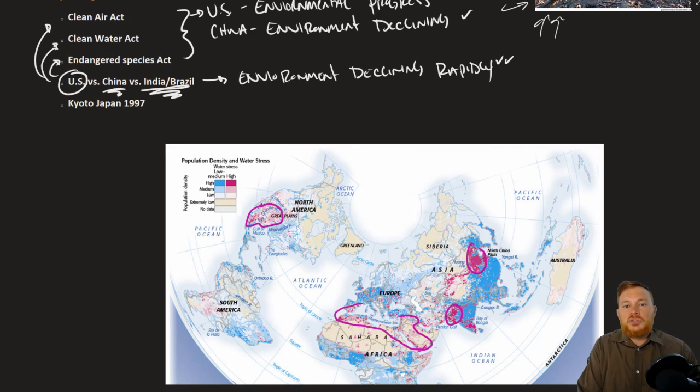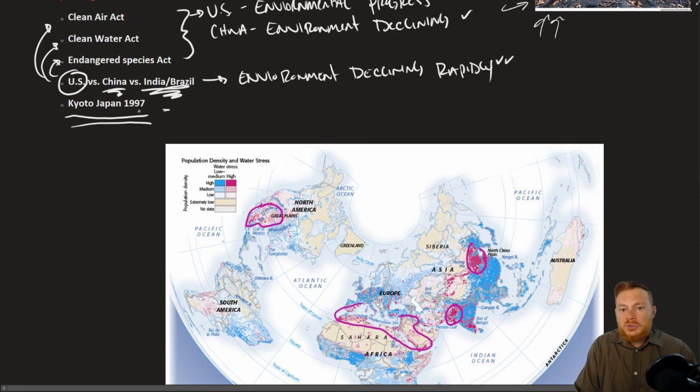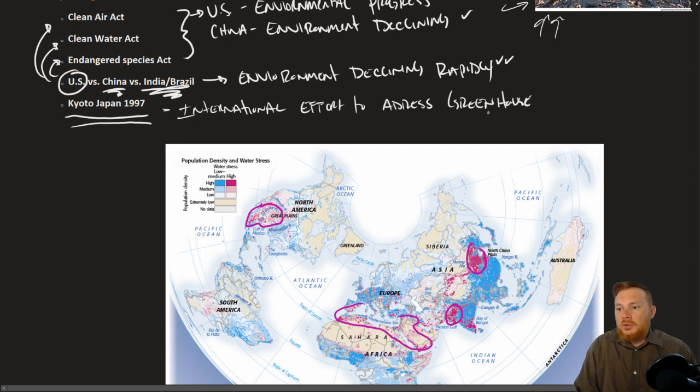But there have been some international efforts to curb environmental problems. The meeting in Kyoto, Japan, sometimes called the Kyoto Protocols, was an international effort to address greenhouse gas. So that is what was destroying the ozone layer, or maybe it wasn't the ozone, but greenhouse gases, which contribute to things like global warming. But even at Kyoto, Japan, at the Kyoto Protocols, China was exempt from them, and the U.S. did not join.